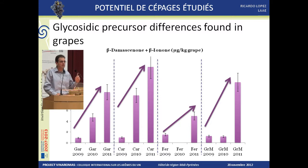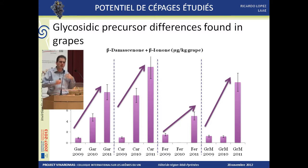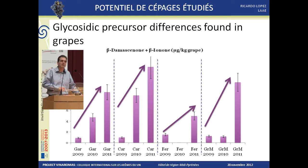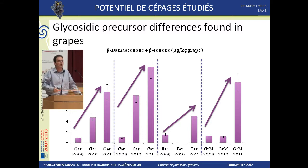Another very important set of compounds — Professor Ferreira mentioned them this morning — are the norisoprenoids. The main two compounds are beta-damascenone and beta-ionone. These are very important for the enhancement of fruity notes. We have found in previous studies that there is no strong relationship between grape variety and damascenone content. Here we observe pretty much the same: the influence of the vintage was more important than the cultivar or variety. And you can see the same pattern across the three years, even though the grapes came from different parts of the Pyrenees.